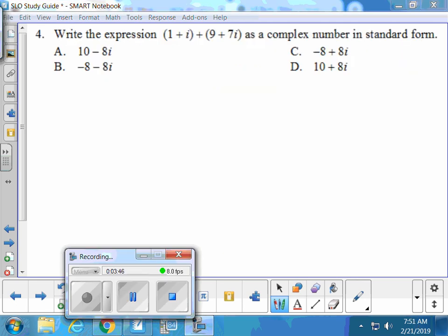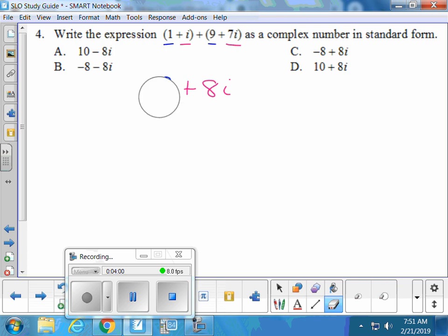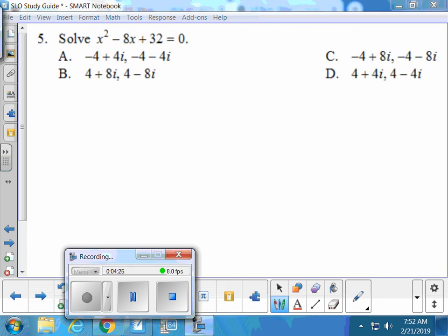The next one, we're working with imaginary numbers, adding up our like terms. 1 and 9 will give you 10. I and 7i gives you 8i. So what choice did you guys get? Oh, yeah, I can't add. I missed that problem. Thank you. Someone's awake today, not me, apparently. I just woke up right here now. It's Thursday. What's the answer? D.